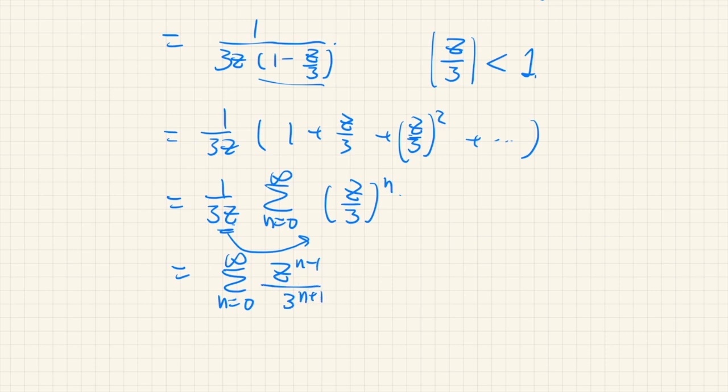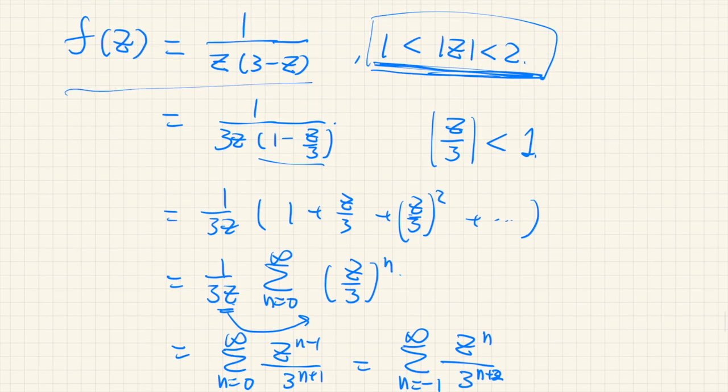So let's shift the index by 1, and we have n from negative 1 to infinity, z to the power of n, and 3 to the power of n plus 2. So this is the Laurent expansion of this function.